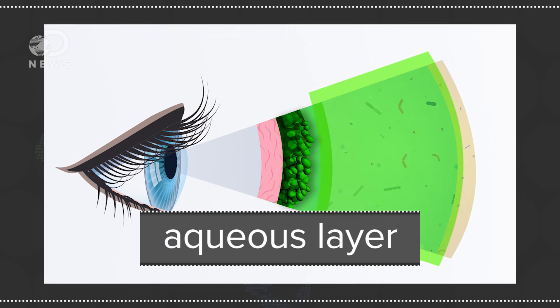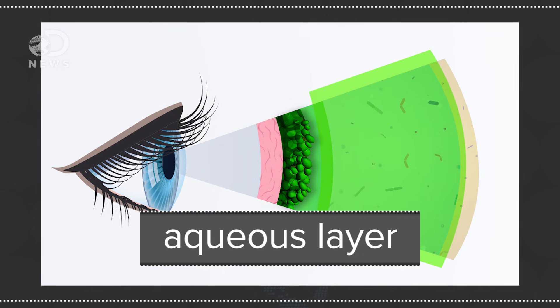On top of that is the aqueous layer, which makes up 90% of your eye's coating. This is a water-based tear solution only about as thick as a single strand of spider silk, which serves many functions, including keeping our eyes hydrated and protects against infection.